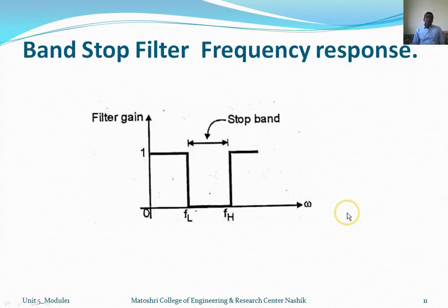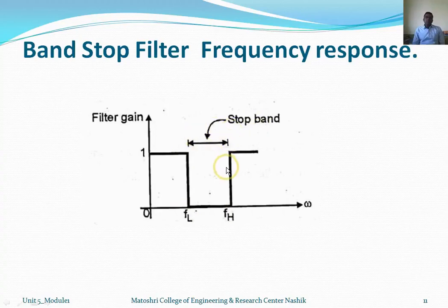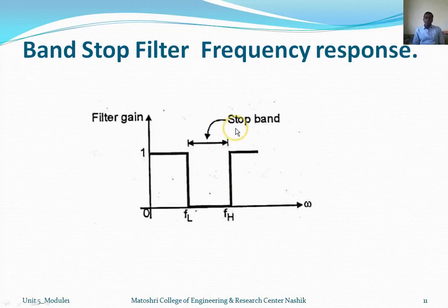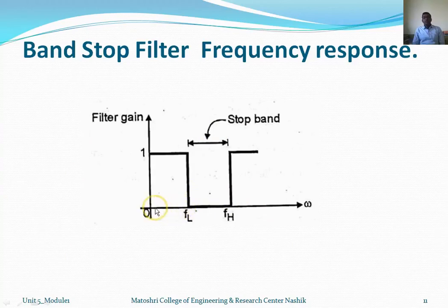The band stop filter is exactly opposite to the band pass filter. A particular band of frequency is stopped, and above that band and below that band the frequencies are passed. As clearly seen in the diagram, a particular band between two frequencies is blocked, while signals above and below that particular band are passed. This is called the band stop filter.